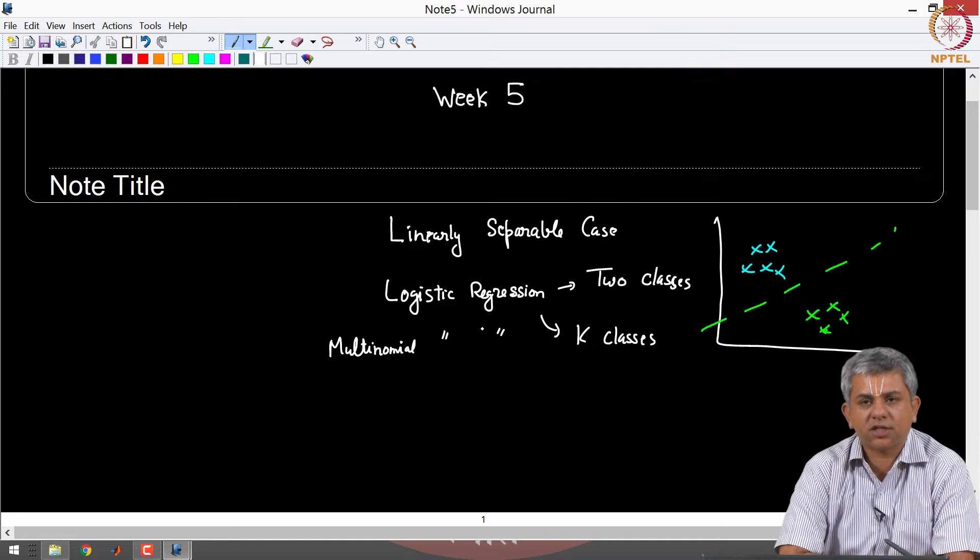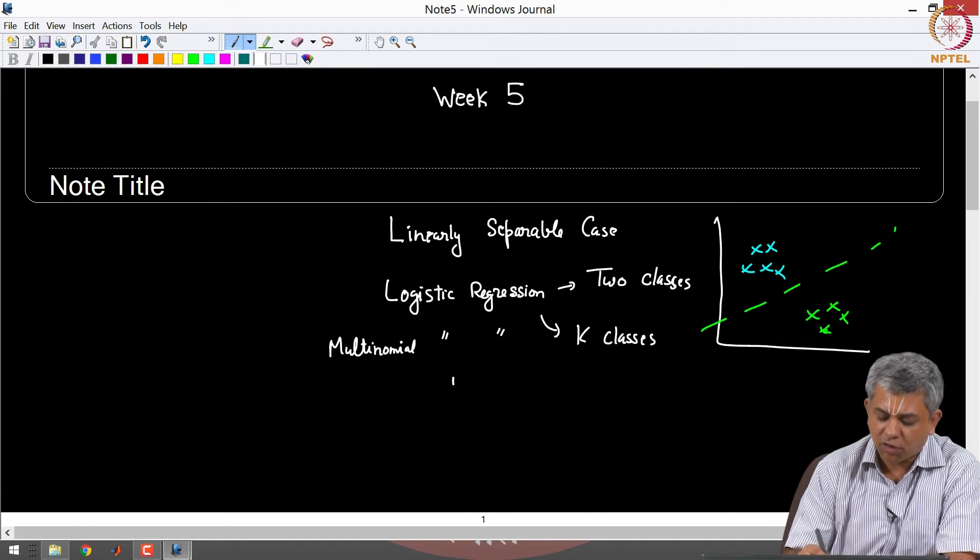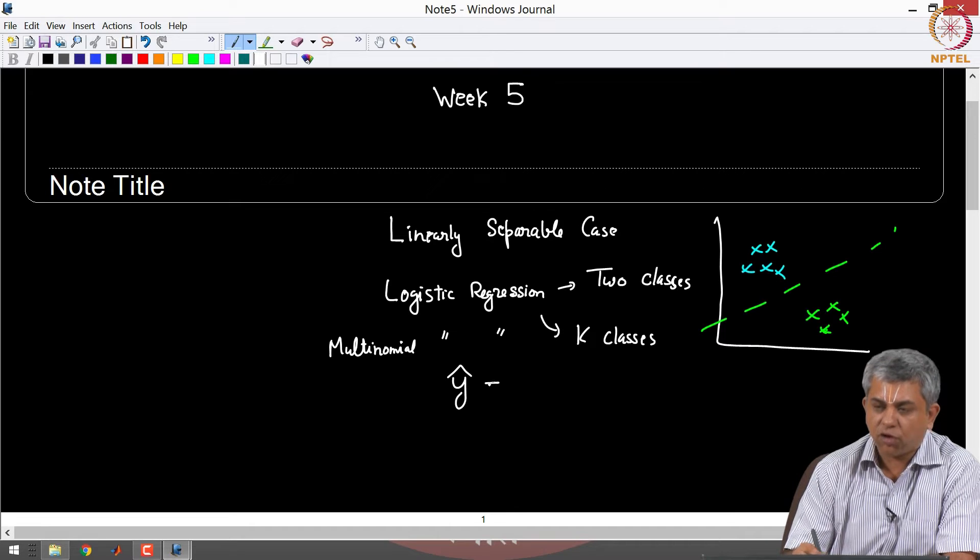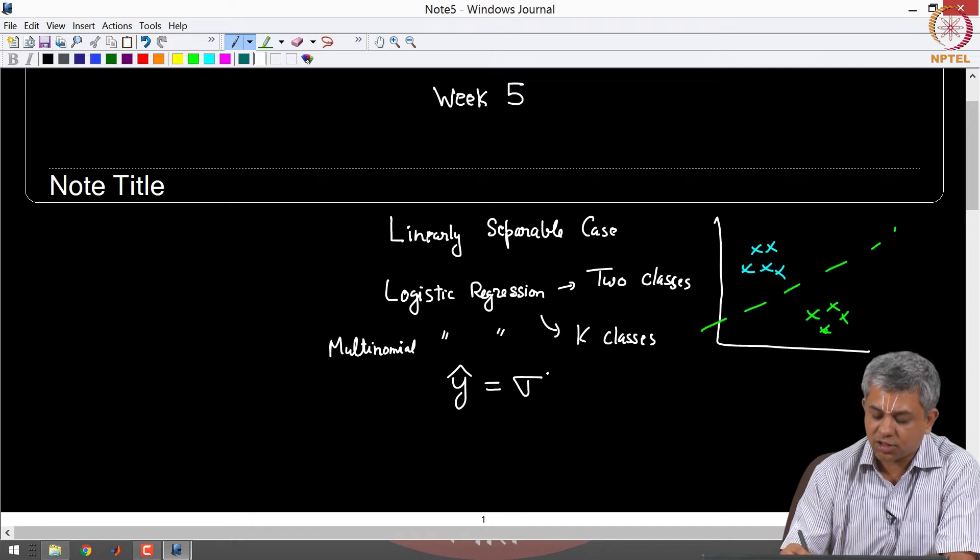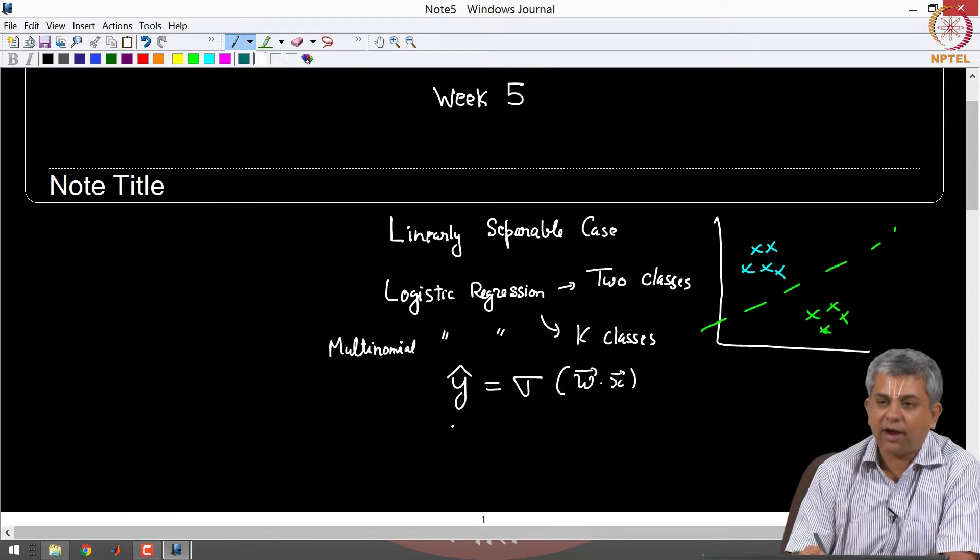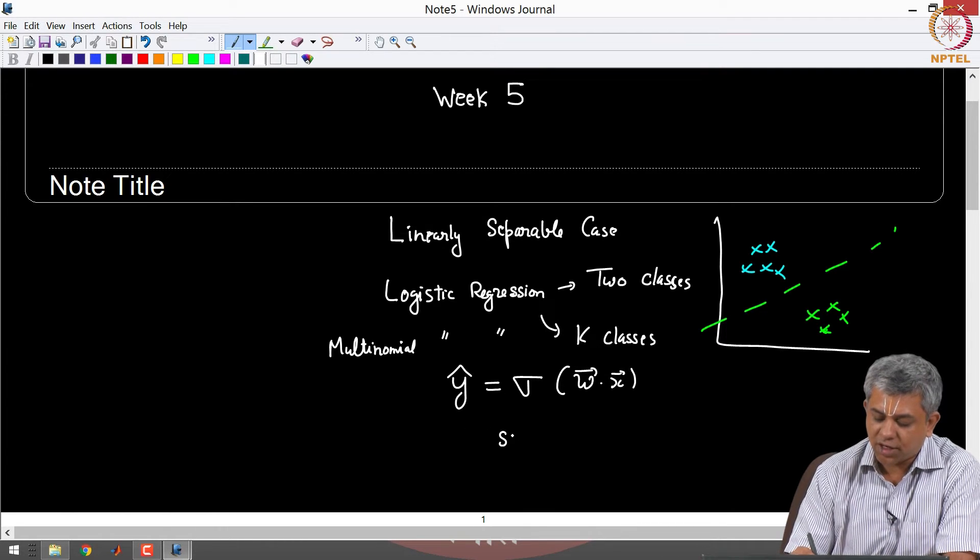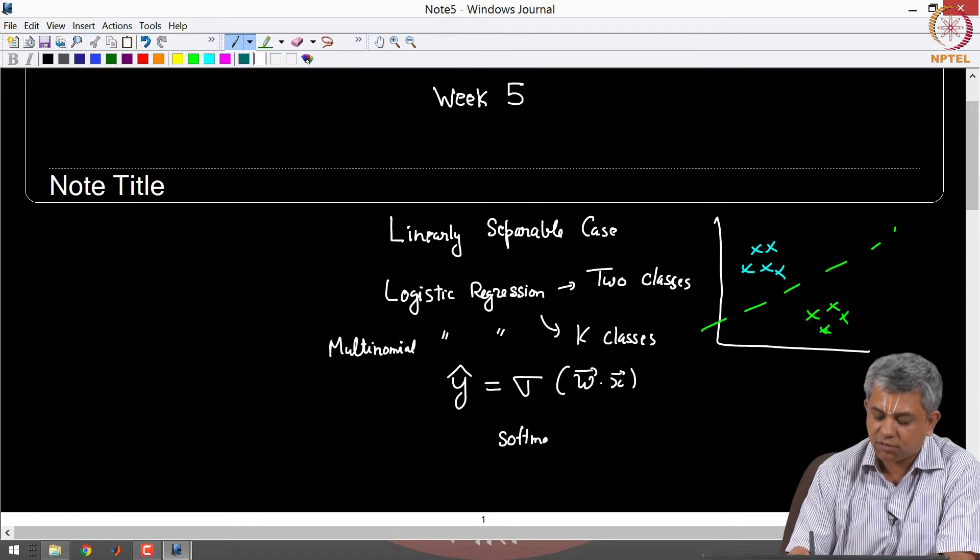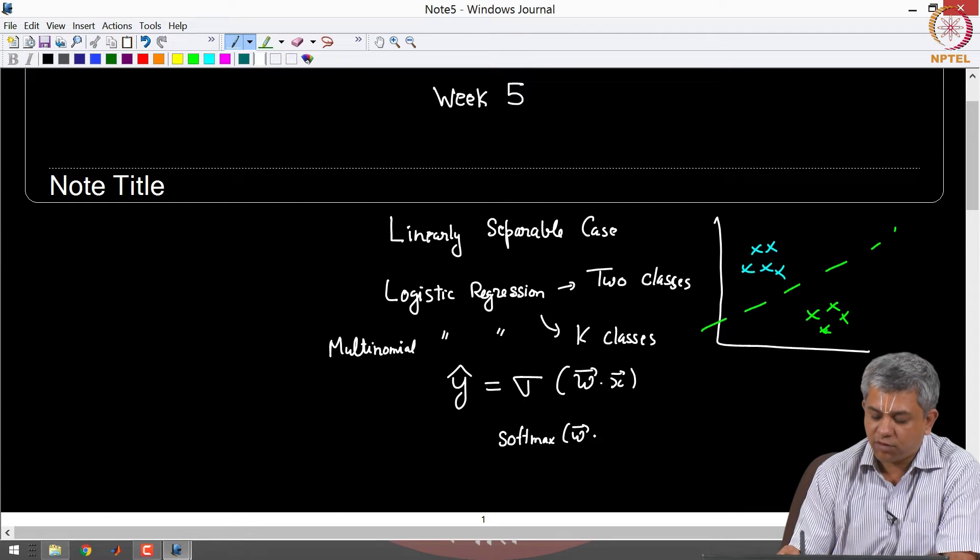In both these cases the major differences were simply in the forward model. The forward model for logistic regression was sigmoid of W dot X and for multinomial logistic regression was softmax of W dot X.